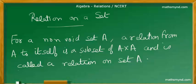Let us denote that set as set A. Then a relation from that set to itself, that is a relation from A to itself, is a subset of A times A, that is the Cartesian product of that set with itself, and it's called a relation on that set.